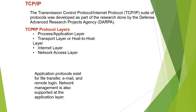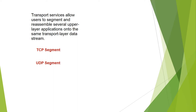The TCP/IP protocol layers are: Process/Application layer, Transport layer (also called host-to-host layer), Internet layer, and Network Access layer. Application protocols exist for file transfer, email, and remote login. Network management is also supported at the application layer. Transport services allow users to segment and reassemble several upper-layer applications onto the same transport layer data stream, using TCP segments and UDP segments.